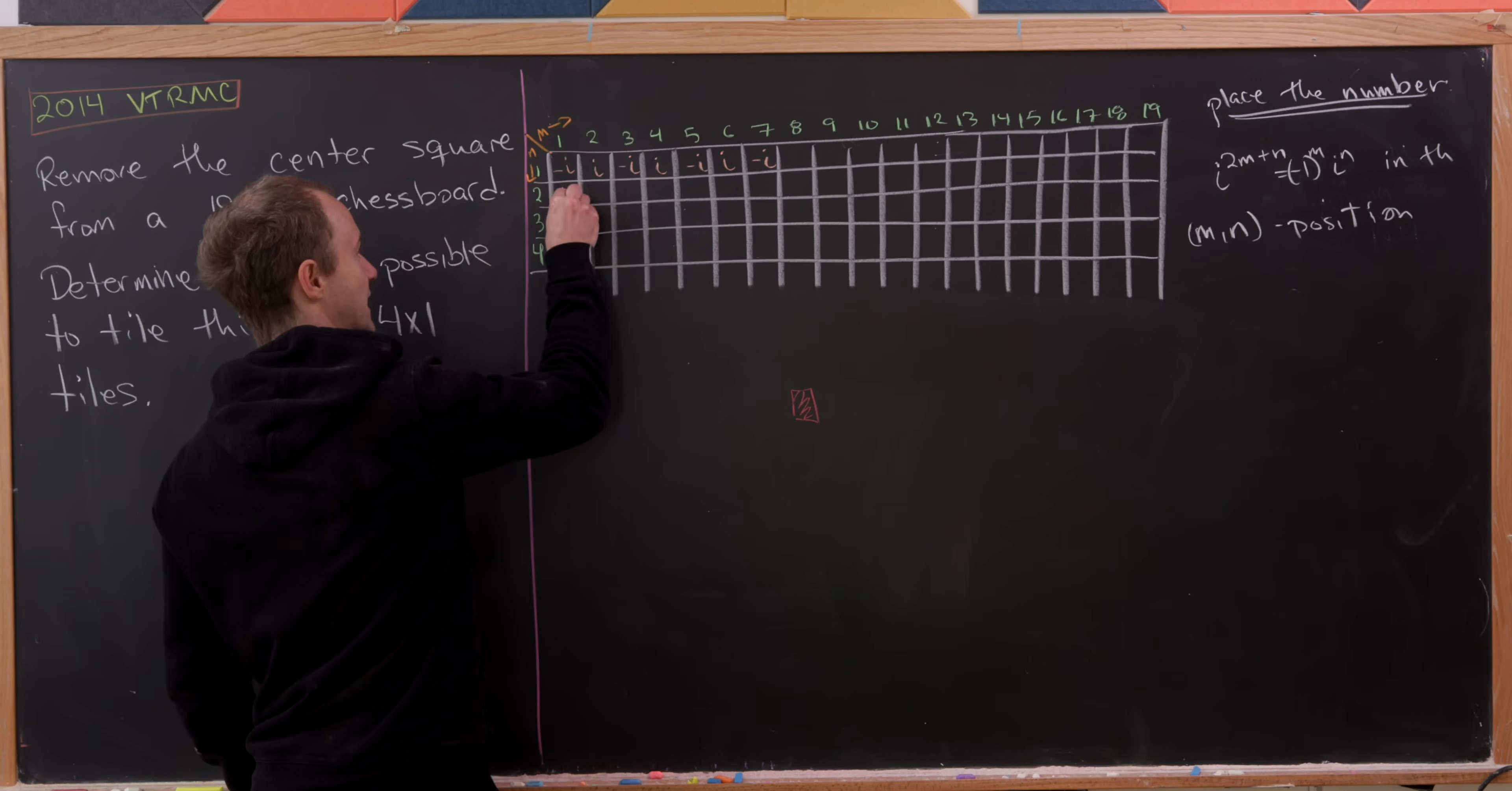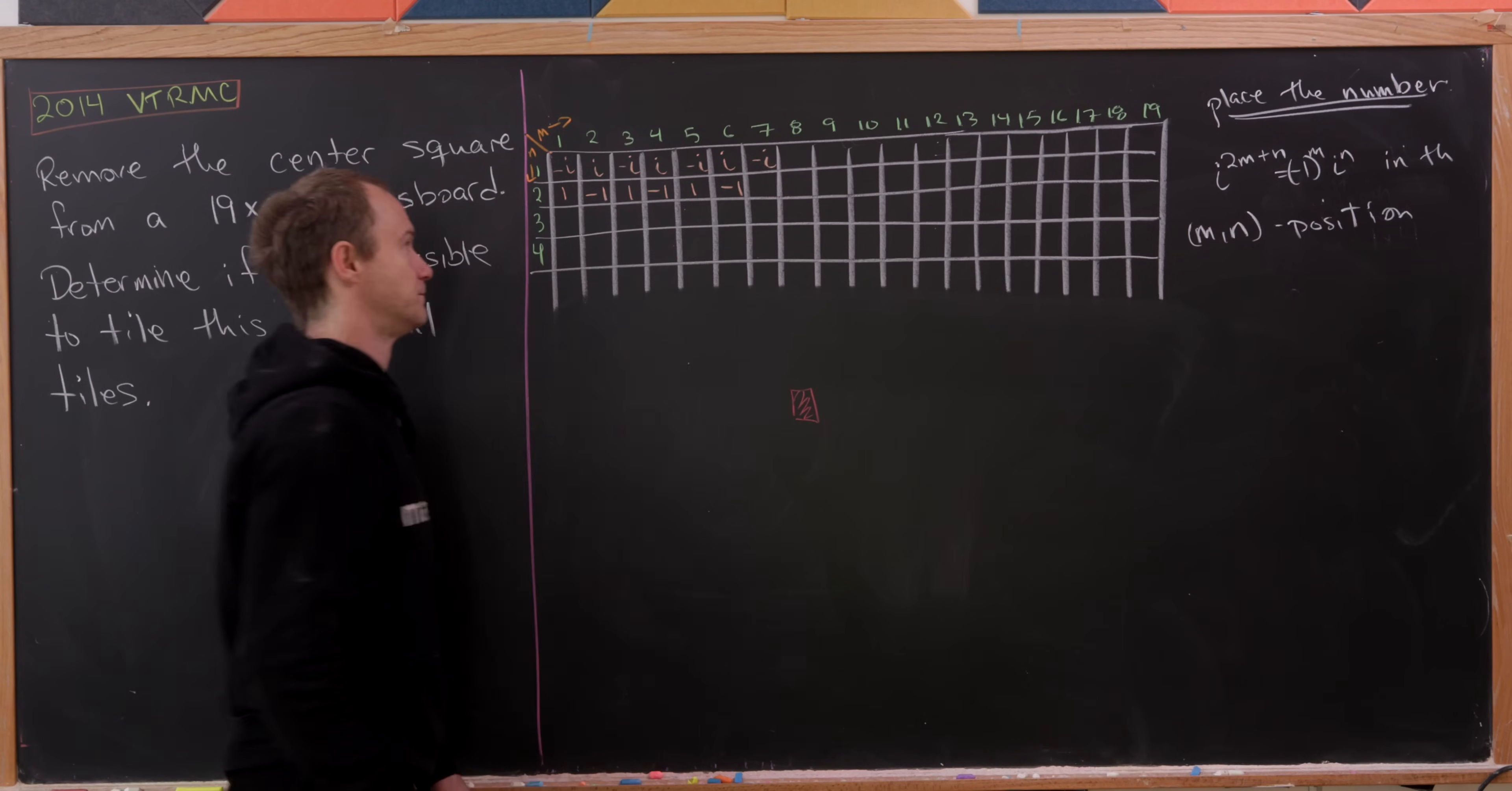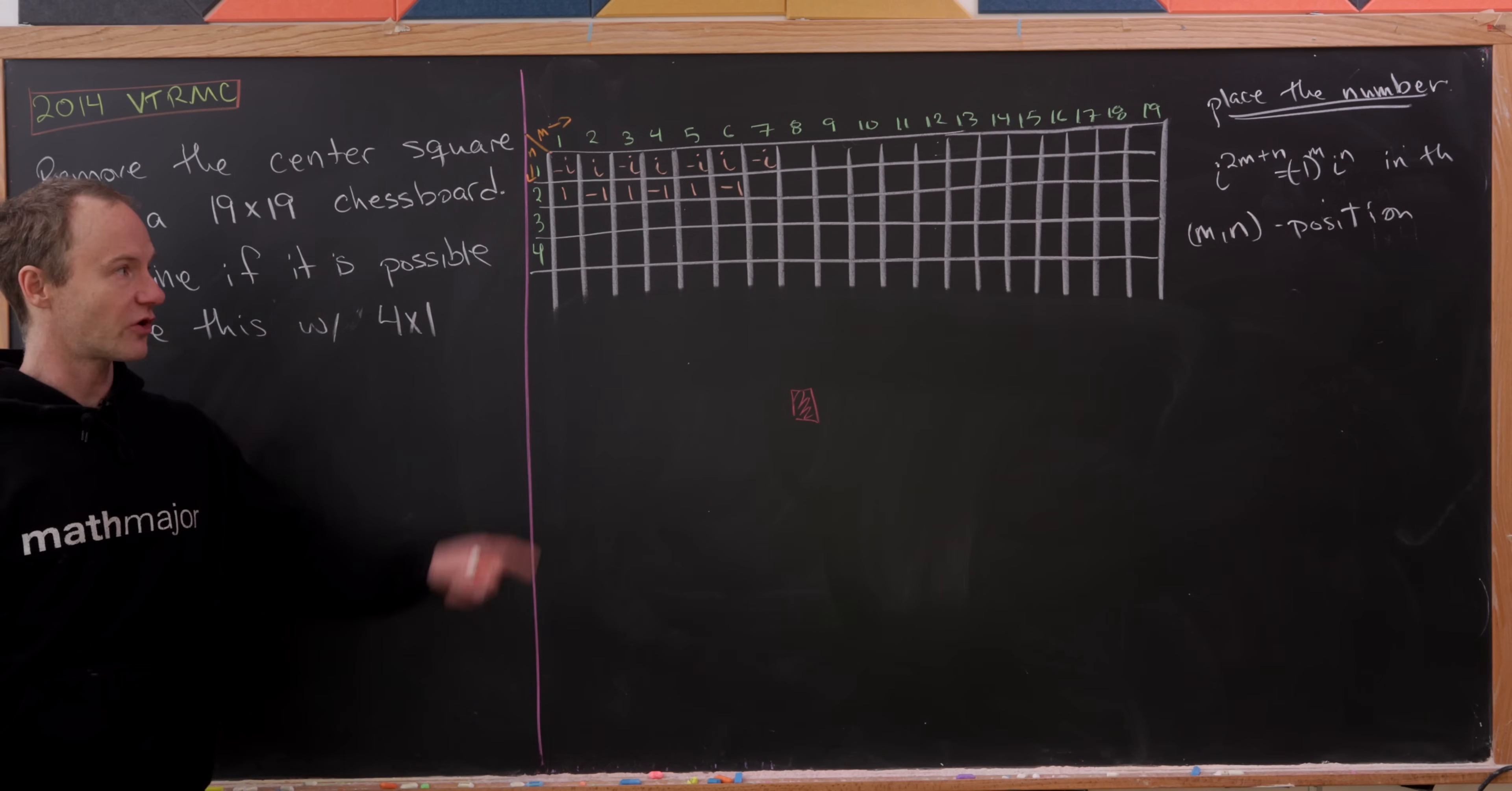And then in this second row, we're going to have a 1, a minus 1, a 1, a minus 1, a 1, a minus 1. So again, we're simply alternating 1's and minus 1's.